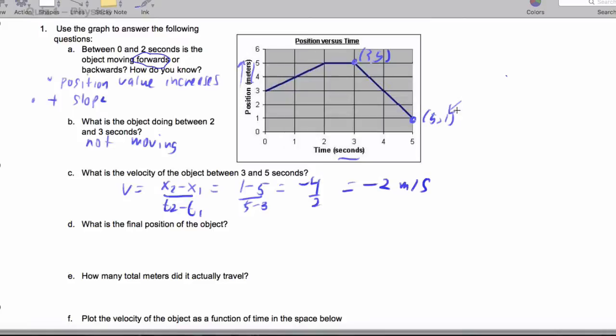The final position of the object, we actually read that off the graph, and that should be 1 meter. How many meters did it actually travel? Well, it traveled 2 here, 0 here, and then 4 here. So a total of 6.